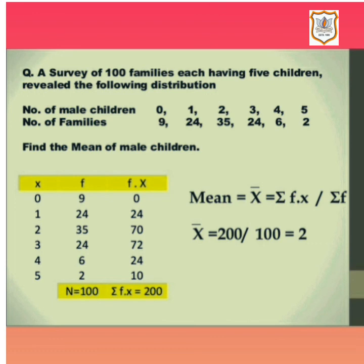Now putting the values in the formula: mean equals Sigma FX which is 200, divided by n which is 100. 200 divided by 100 equals 2. So we have found the mean of the grouped data, and the mean number of male children is 2.